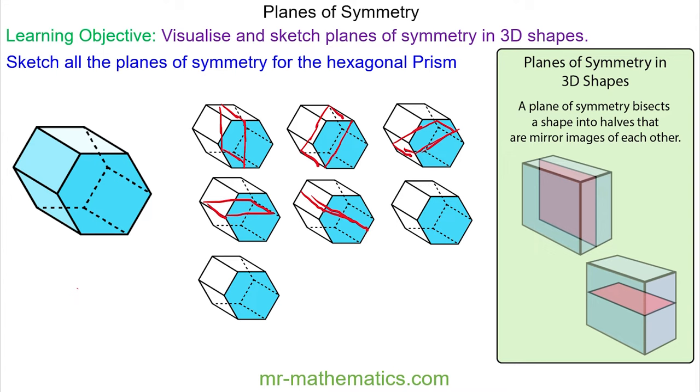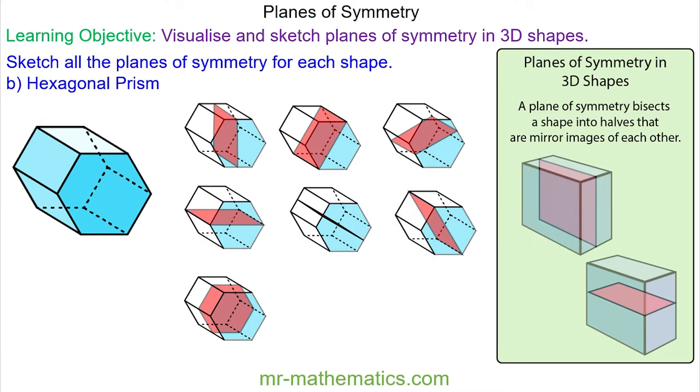As we work around the shape, we will have included all the planes of symmetry using the hexagonal face. The final plane of symmetry would be halfway along this rectangular face. So you can see a hexagonal prism has seven planes of symmetry.